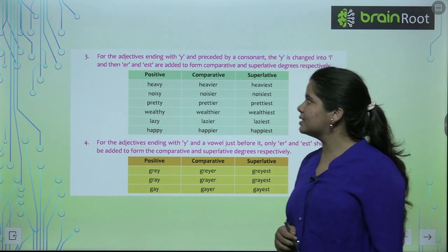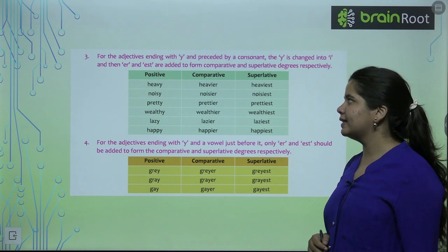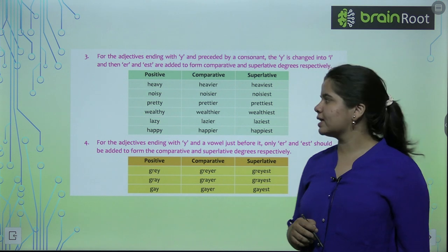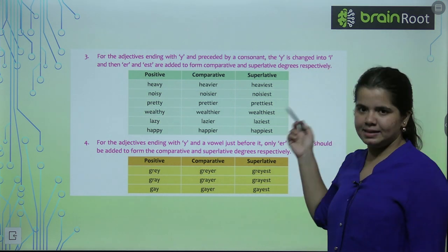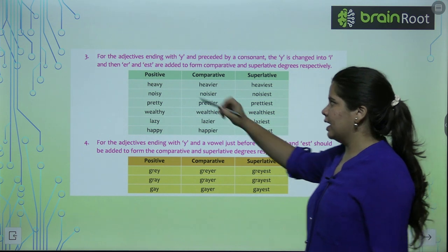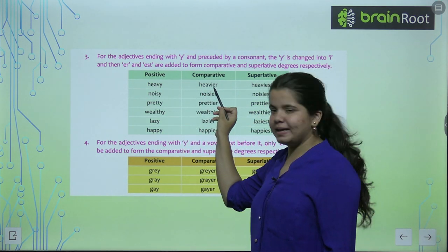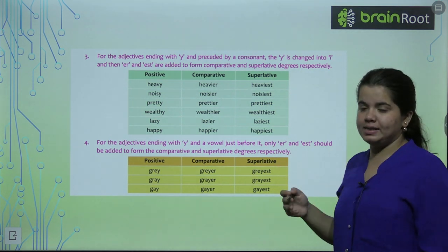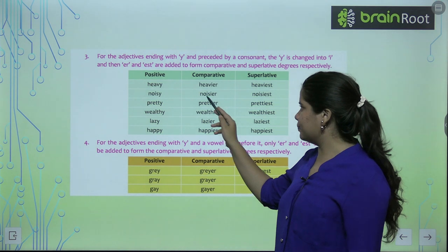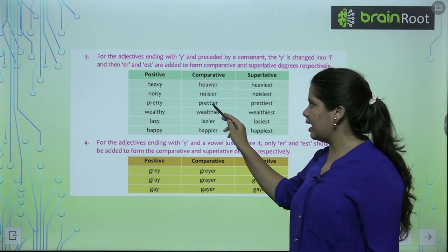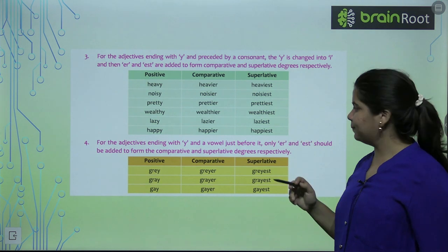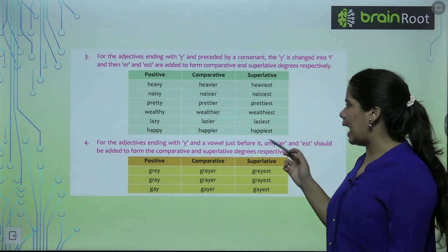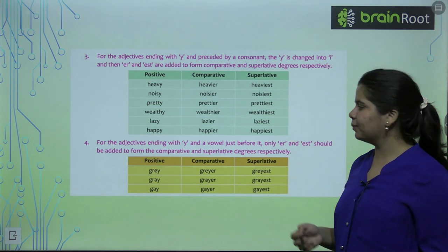Next category: words ending in -y. We replace y with i and add -er or -est. Heavy becomes heavier, heaviest. Noisy becomes noisier, noisiest — check the spelling. Pretty becomes prettier, prettiest. Happy becomes happier, happiest.